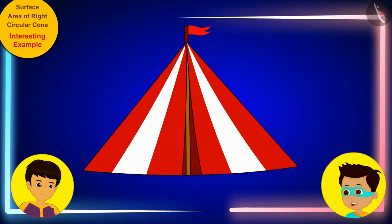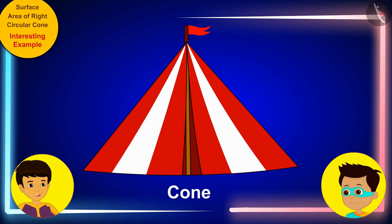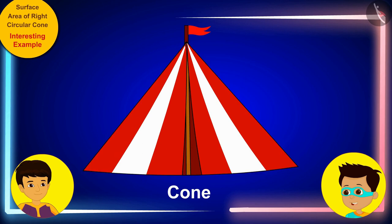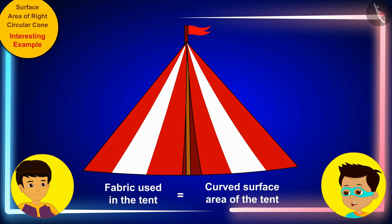Look at the tent Manas. Can you tell me what shape is this tent? The tent looks like a cone, so it's conical in shape. You're absolutely right. And because this tent only uses fabric to create this curved surface, we can say that the fabric used in the tent will be equal to the curved surface area of the tent.